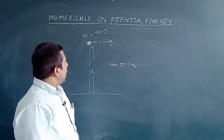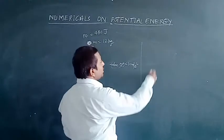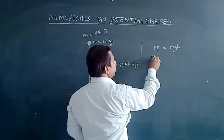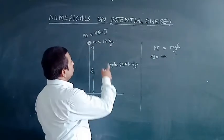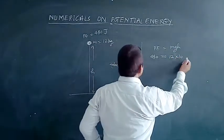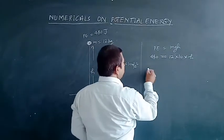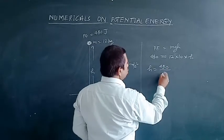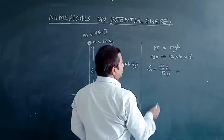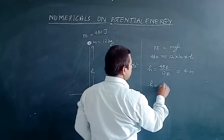We can solve for the height by applying the direct formula: potential energy = mgh. So 480 joules = 12 kg × 10 m/s² × h. Therefore h = 480 ÷ (12 × 10) = 480 ÷ 120 = 4. The height attained by this object is equal to 4 meters.